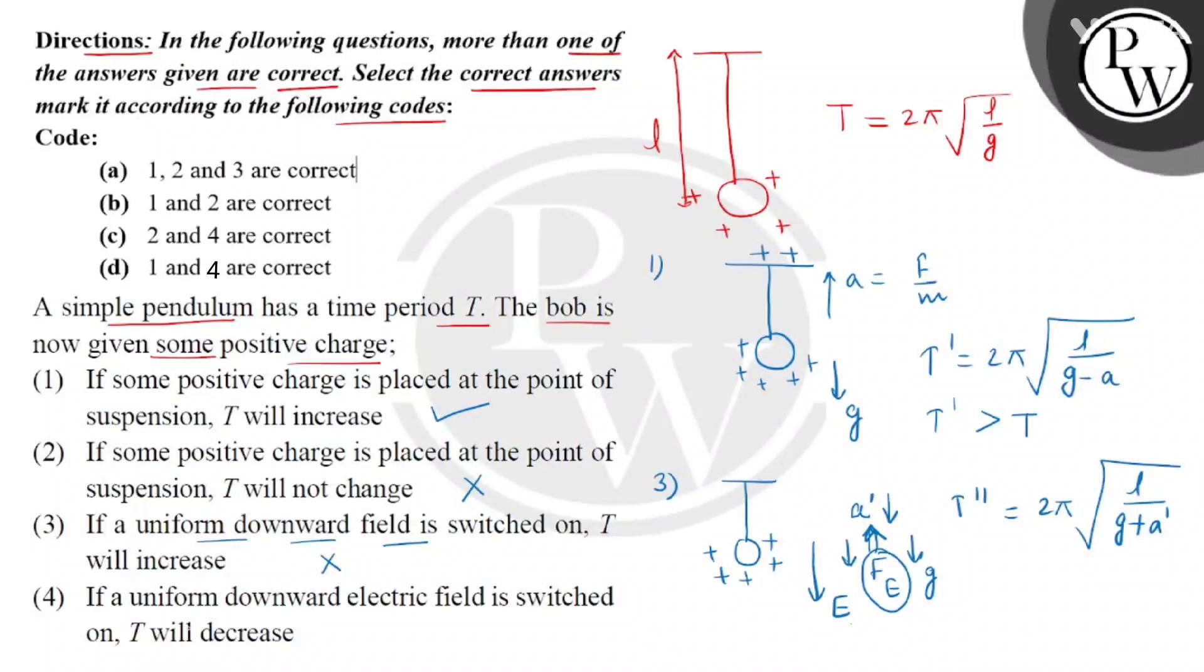And in statement number 4, T will decrease. So this statement is correct. Now we can say that statements 1 and 4 are correct. So the correct answer we will have as option number D. Thank you.